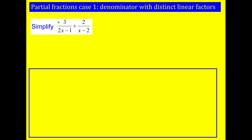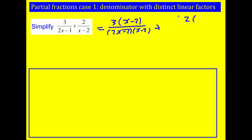To start with, I'd like you to pause the video and try to simplify this — that is, write it as a single fraction. So what we did last lesson is we can put it over a common denominator. The first one, I can multiply top and bottom by x minus 2, and the second one, I can multiply top and bottom by 2x minus 1.